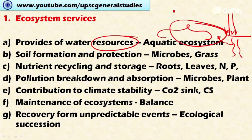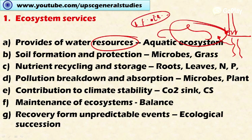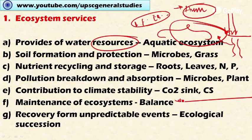The second ecological service is soil formation and protection. Biodiversity includes varied organisms ranging from microorganisms like bacteria, fungi, and actinomycetes, to small organisms like earthworms and small insects. These components help in soil formation by creating humus. Grasses growing on the top layer of the soil also help in preventing soil erosion.